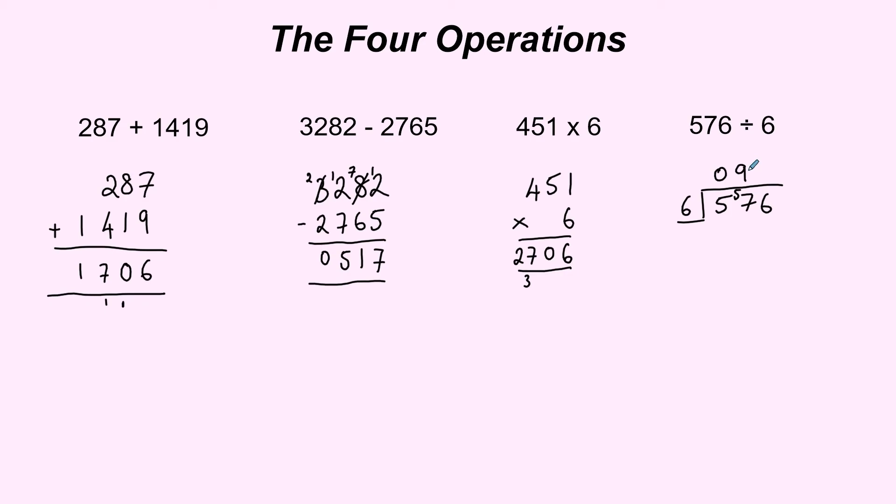That gave us 54 which means we've got a remainder of 3 left over to carry over to the next column. To finish off how many 6s go into 36 and that would be 6 exactly. Now sometimes at the end you end up with a remainder there. We're not going to cover that today but we'll look at that in another lesson. But that's your 4 basic operations and that's different strategies of how you might set them out to do that kind of calculation.